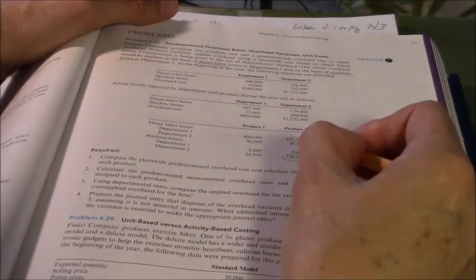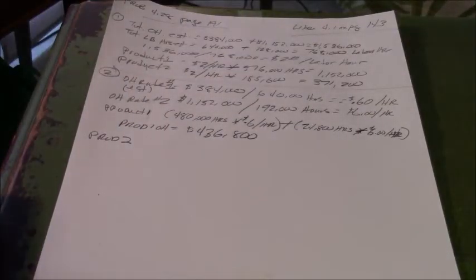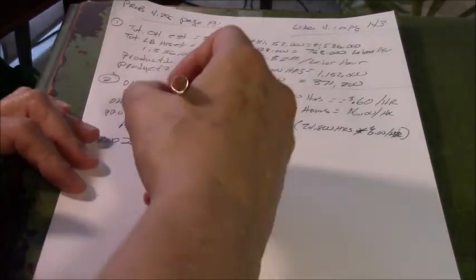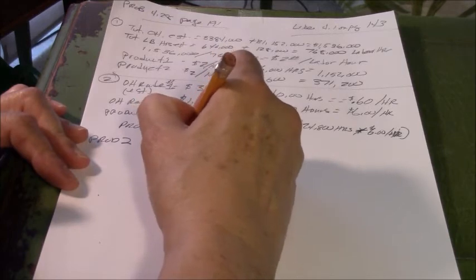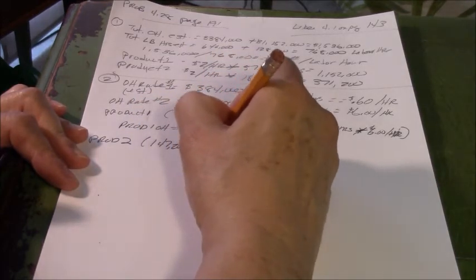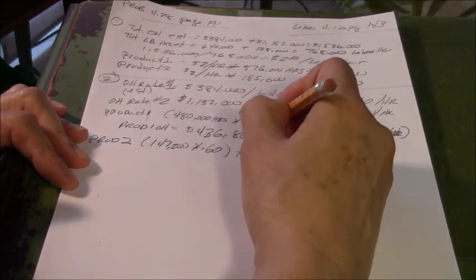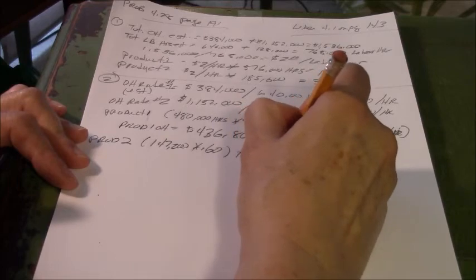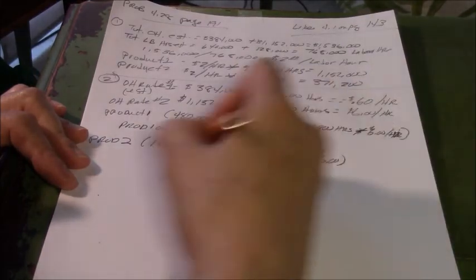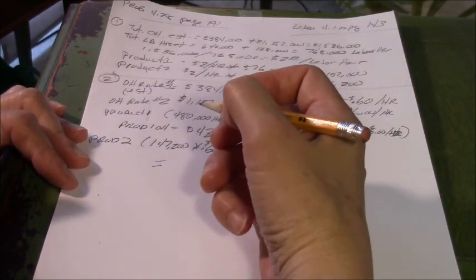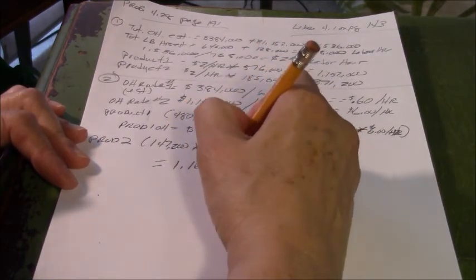Because product two uses for department one, labor hours from department two, machine hours. So for product two, we're going to have that 147,200 times 0.6 plus 180,000 machine hours times six. And product two then ends up equals overhead is 1,168,320.